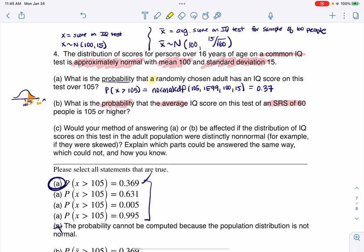One of the things I notice here is this says a randomly chosen adult, where this says the average of 60 adults. So those are phrases that help me realize this problem is dealing with a population distribution.